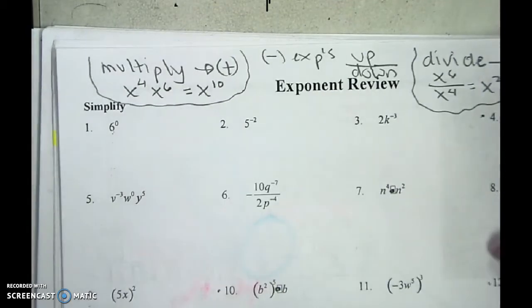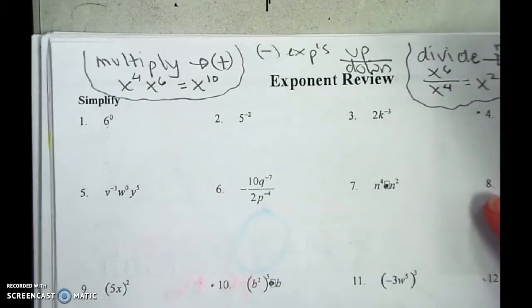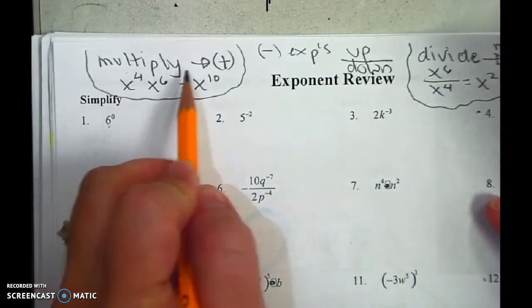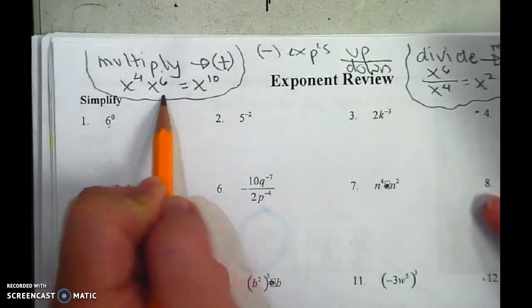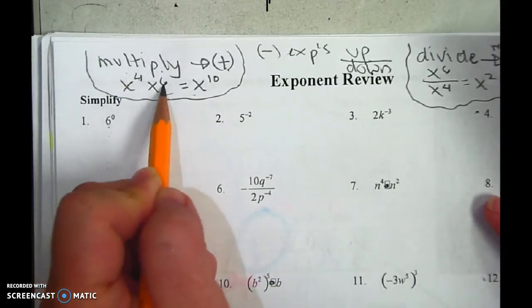All right, before I actually go over all these problems, let me give you some basic rules. Whenever you're multiplying exponents, you add. So if I have x to the 4th and x to the 6th, that's x to the 10th, because 4 plus 6 is 10.